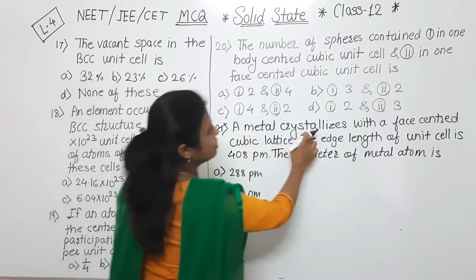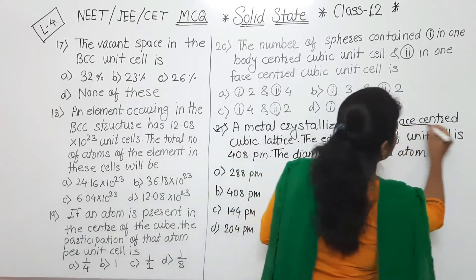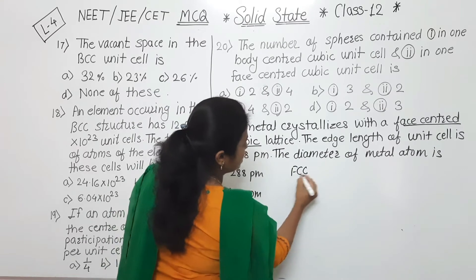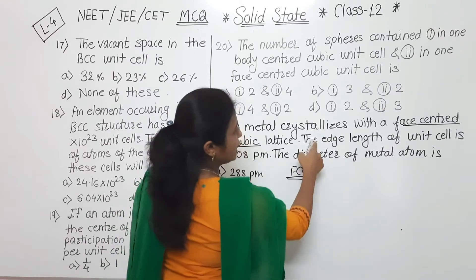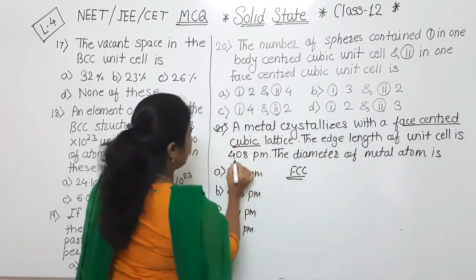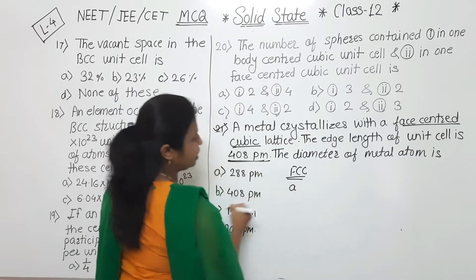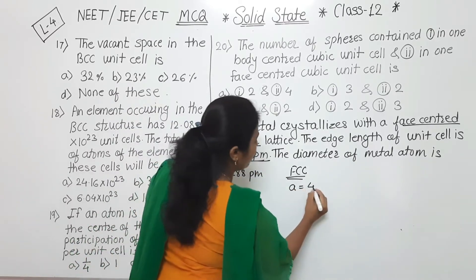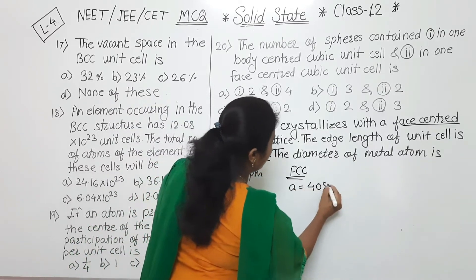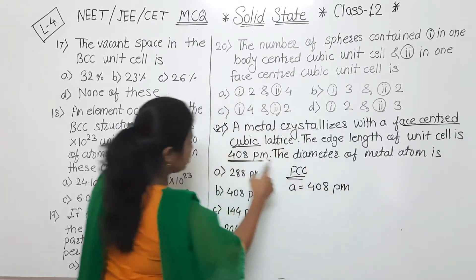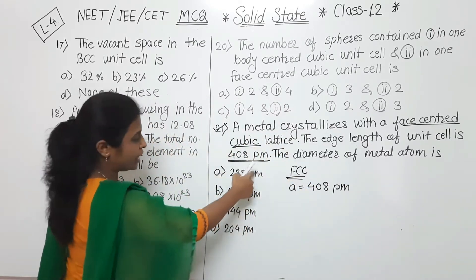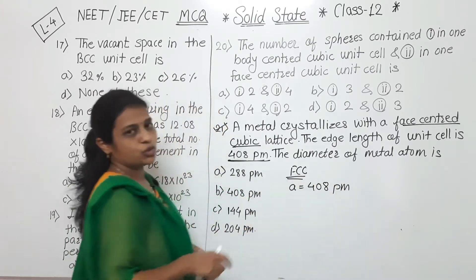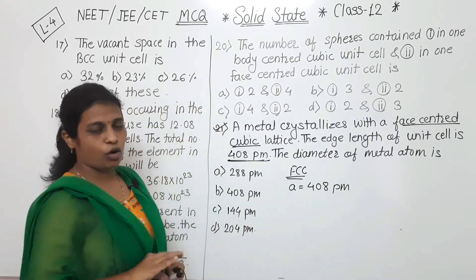A metal crystallizes with face-centered cubic structure — that is FCC. The edge length of the unit cell, denoted by the symbol A, is 408 picometers. Whatever answer we have to calculate is also given in picometers, so no need to convert into centimeters or meters.